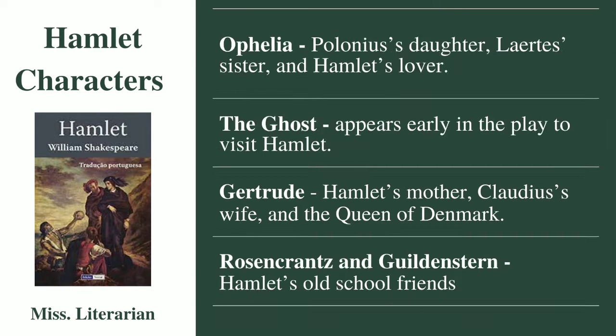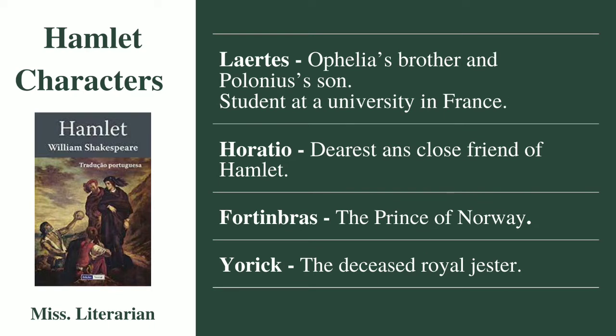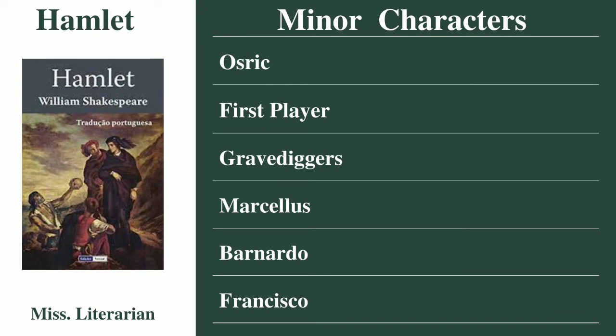Next is Ophelia. She is the daughter of Polonius, the sister of Laertes, and Hamlet's lover. Next is the ghost — an otherworldly presence which visits Hamlet early in the play. Rosencrantz and Guildenstern are a pair of Hamlet's old school friends. Laertes is Ophelia's brother and Polonius's son; he is a student at a university in France. Horatio is Hamlet's trustworthy and closest friend. Fortinbras is the prince of Norway. Yorick is the deceased royal jester. There are also minor characters in this play.